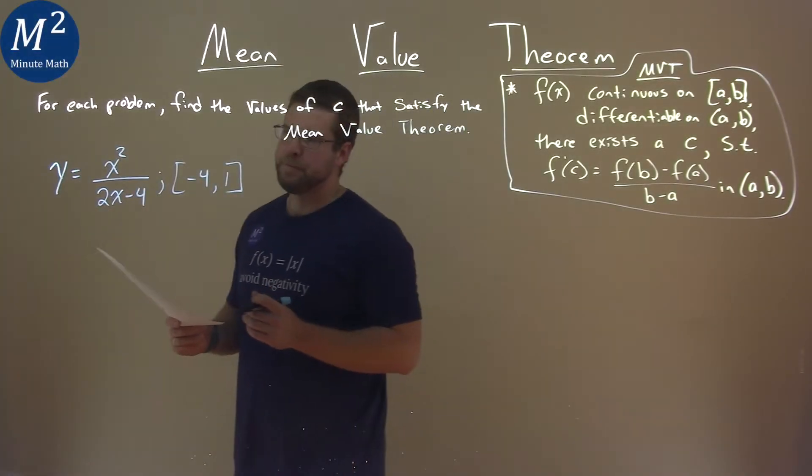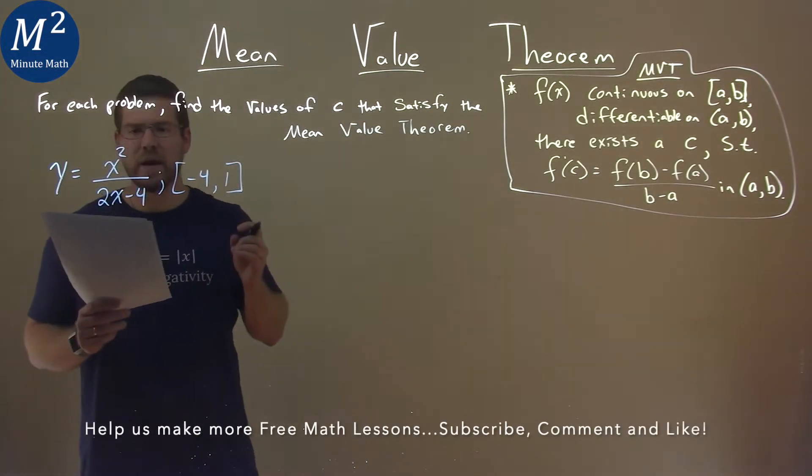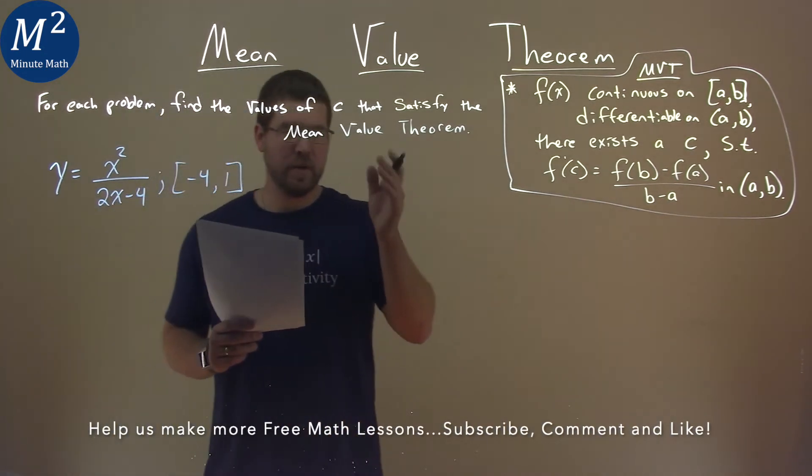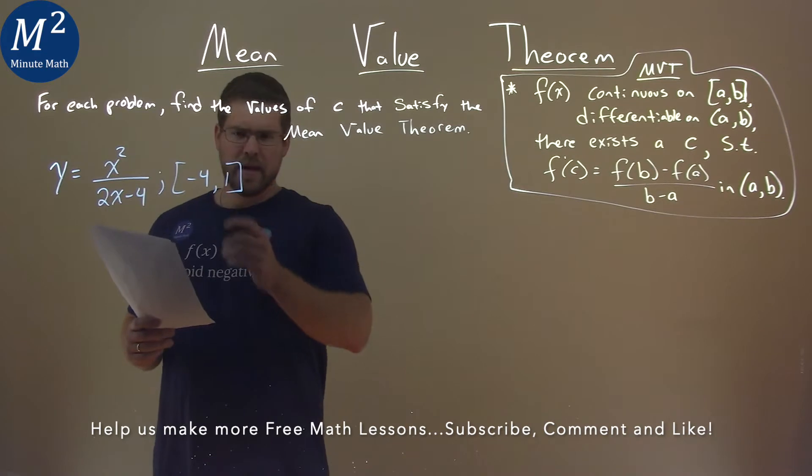I'm giving this problem right here. Y equals x squared over 2x minus 4, and we want to find the values of c that satisfy the mean value theorem on our interval from negative 4 to 1.